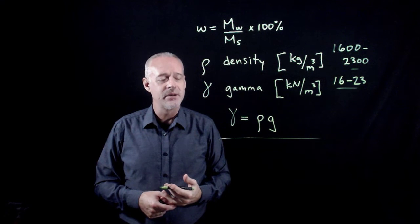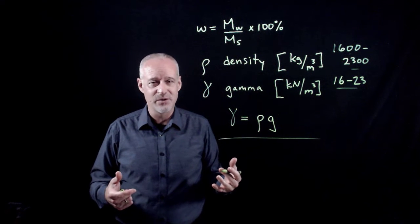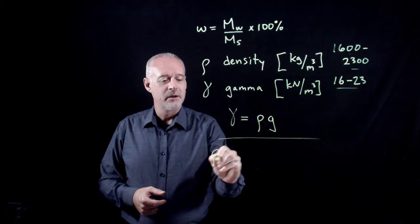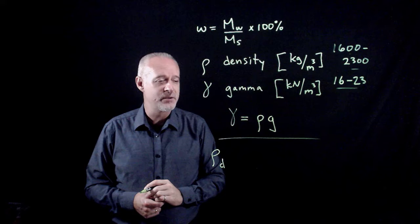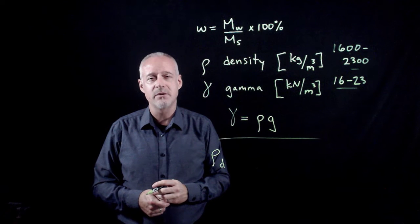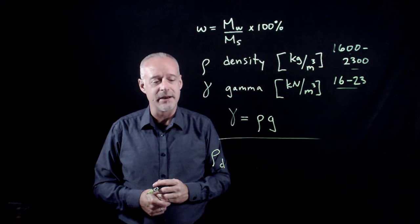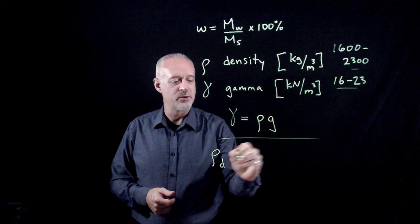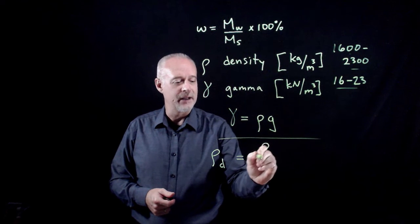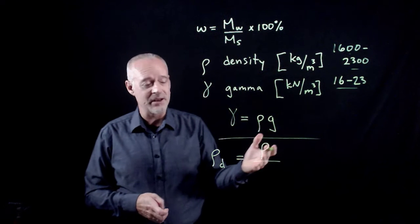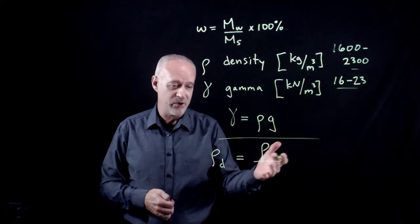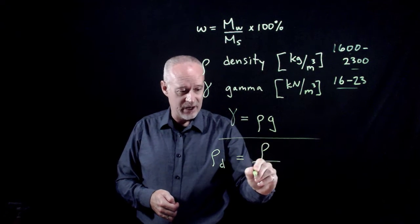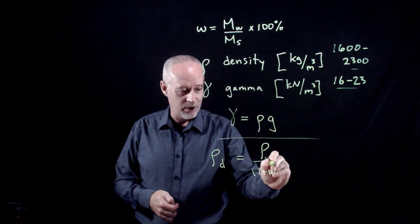The most important formula that we use for that is gamma sub D, where the subscript D is used to denote dry density. The relationship between the dry density and the density, sometimes called wet density or bulk density, is simply rho divided by 1 plus water content.